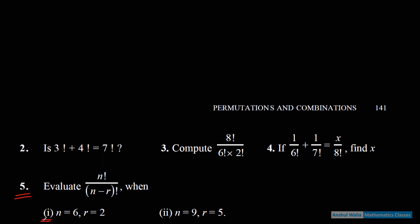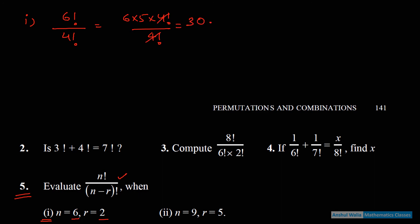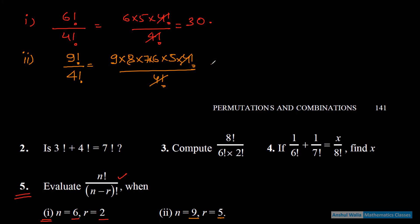Q5 — evaluate n!/(n−r)! with two parts. First: n=6, r=2 — 6!/(6−2)! = 6!/4! = (6×5×4!)/4! = 30. Second: n=9, r=5 — 9!/4! = (9×8×7×6×5×4!)/4! = 9×8×7×6×5 = 15120.